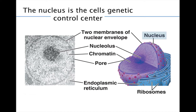The nucleus contains most of the cell's DNA and controls the cell's activities by directing protein synthesis. Eukaryotic chromosomes are made up of material called chromatin, which is a complex of proteins and DNA. As a cell prepares to divide, the DNA is copied and the thin chromatin fibers coil up, becoming thick as the familiar separate structures we know as chromosomes. Enclosed in the nucleus is a nuclear envelope, a double perforated structure with protein-lined pores that control the flow of materials into and out of the nucleus.